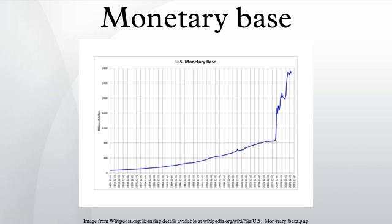Kagan, Philip. "High Powered Money." Determinants and Effects of Changes in the Stock of Money, 1875–1960. Cambridge, Massachusetts: National Bureau of Economic Research, pages 45–117. ISBN 0-87014-097-3. Retrieved February 8, 2011. Aggregate Reserves of Depository Institutions and the Monetary Base.